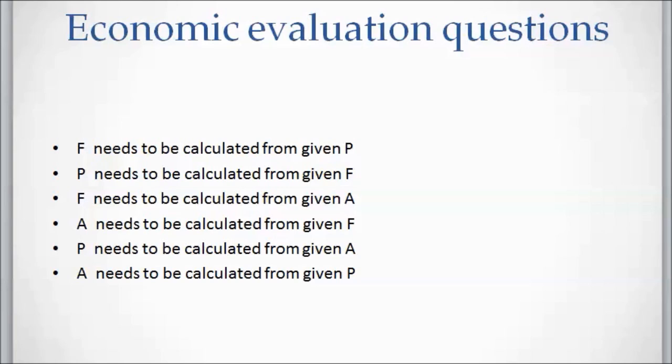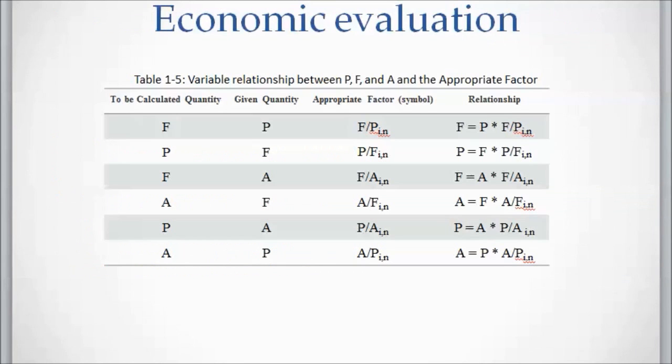Fifth category: P, present value, needs to be calculated from given A. And in the sixth category, A needs to be calculated from given P. Note that in each type we have only two money variables.